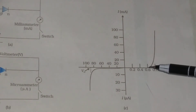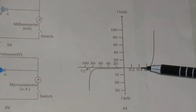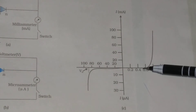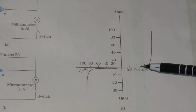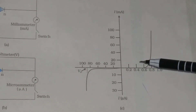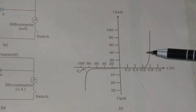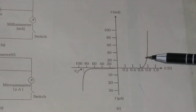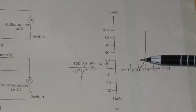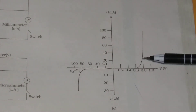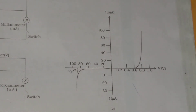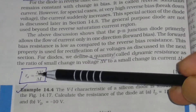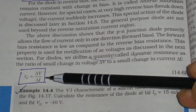How does dynamic resistance differ from static resistance? Static resistance is the ohmic resistance and is constant at a given temperature. But dynamic resistance is not constant — it is the runtime resistance, and we calculate it at a particular period of time. So, dynamic resistance Rd = ΔV / ΔI.